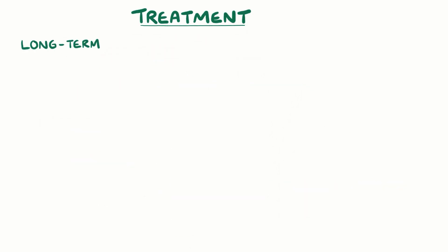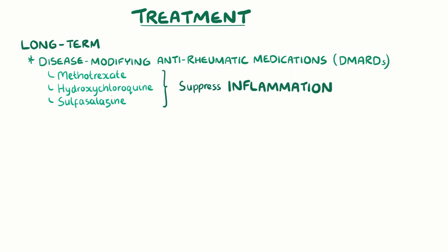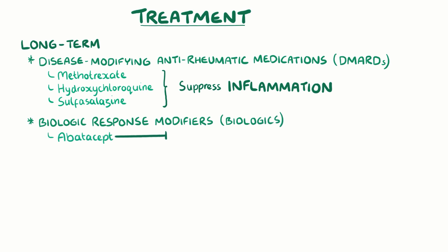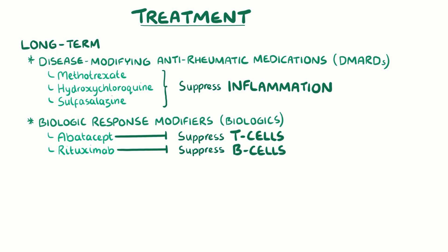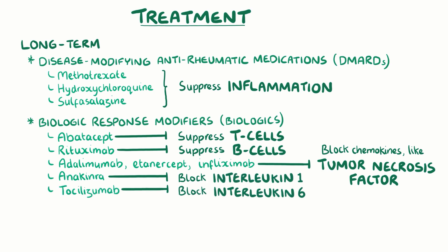The long-term management of rheumatoid arthritis involves disease-modifying anti-rheumatic medications, like methotrexate, hydroxychloroquine, and sulfasalazine, which help to suppress inflammation. There are also biologic response modifiers, or biologics: abatacept suppresses T cell activity, rituximab suppresses B cells, and adalimumab, etanercept, and infliximab block TNF-alpha. Anakinra blocks interleukin-1, and tocilizumab blocks interleukin-6. Treatment of acute flares can be done with anti-inflammatory medications like NSAIDs, as well as short-term use of glucocorticoids.